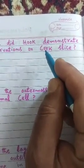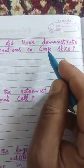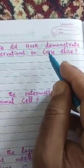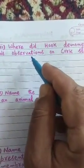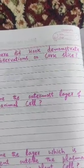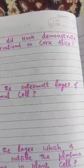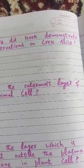Third part: where did Hook demonstrate his observations on cork slices? We know that Robert Hooke observed thin cork slices under the microscope and found compartments — empty spaces, box-like structures, empty room-like structures — which Robert Hooke named 'cells'. Robert Hooke's observations on cork slices were published and shared with scientists.